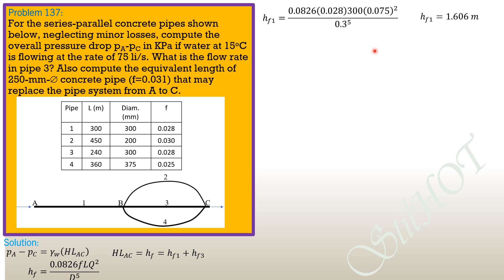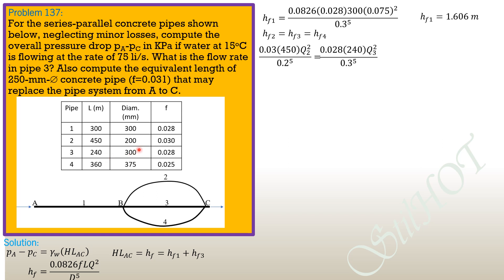Since HF2 = HF3 = HF4, we express Q2 and Q4 in terms of Q3. Setting up the equations using the Darcy-Weisbach formula: for pipe 2, 0.03 times 450 times Q2² over (0.2)⁵ equals for pipe 3, 0.028 times 240 times Q3² over (0.3)⁵, and equals for pipe 4, 0.025 times 360 times Q4² over (0.375)⁵.